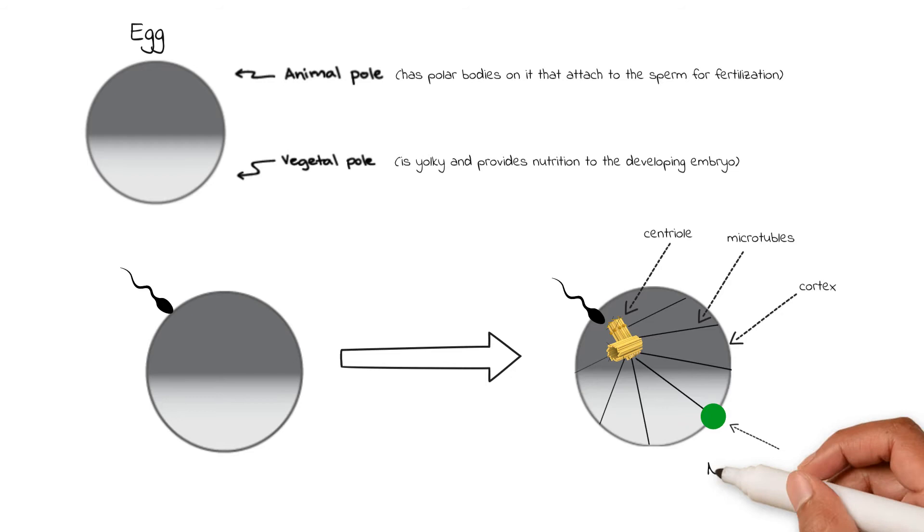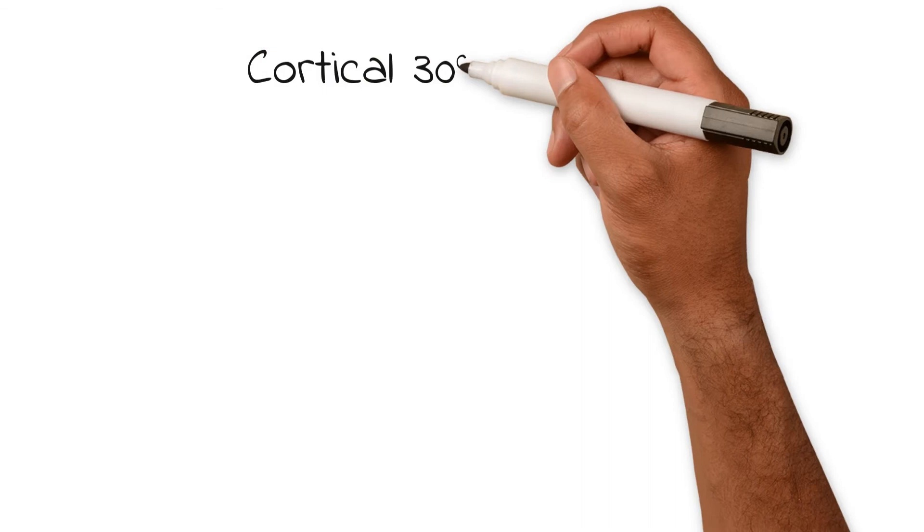Despite the sperm's entry point, opposite of the sperm's entry point is a key location called the Nieuwkoop center, which we will get back to later, so remember it.